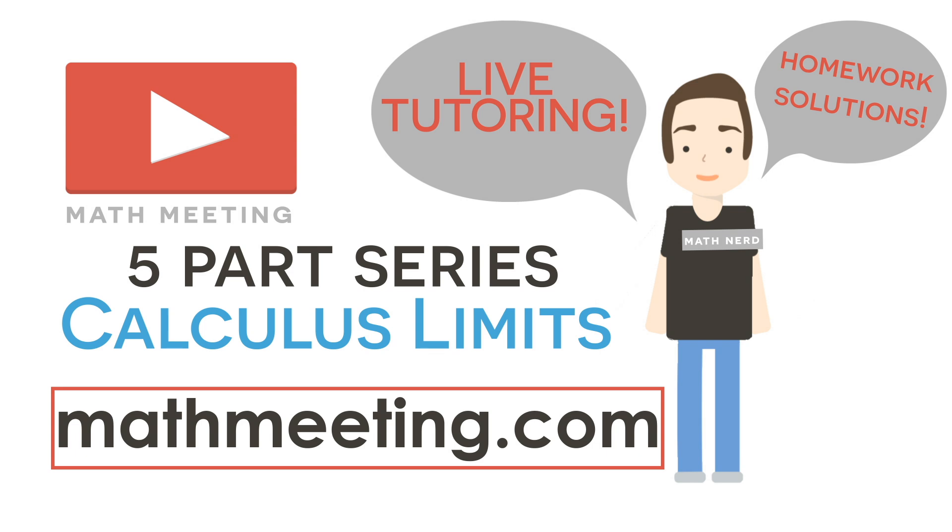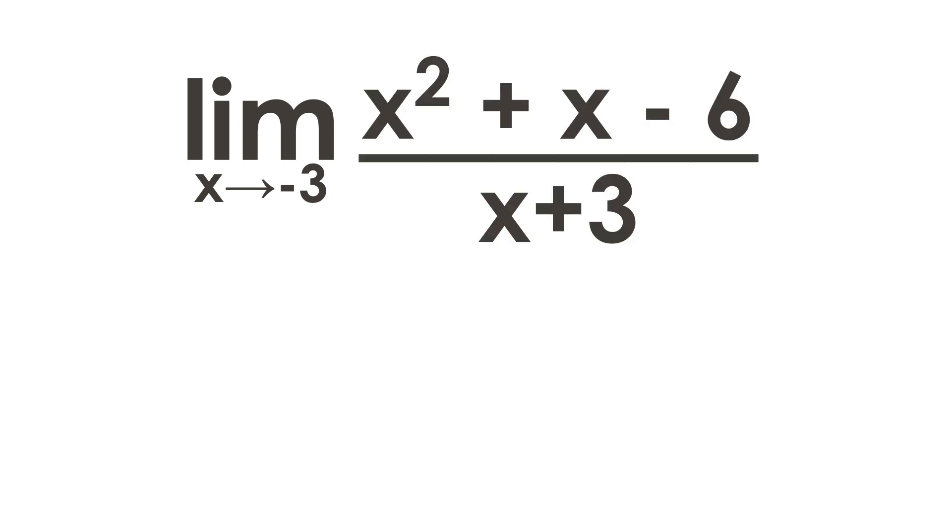But let's get started right away with this example. So in this example, we have the limit as x approaches negative 3 of x squared plus x minus 6 all over x plus 3.